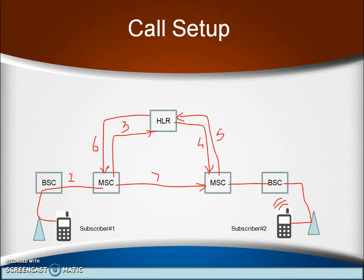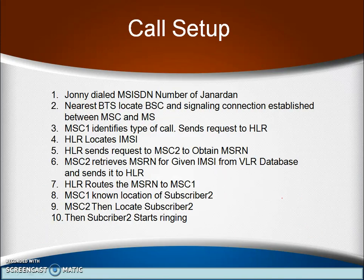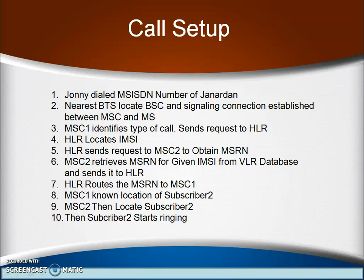This flow is summarized in steps: Step 1 — Johnny dials the MSISDN number of Janardhan. Step 2 — The nearest BTS locates the BSC and signaling connection is established between MSC and mobile station. Step 3 — MSC1 identifies the type of call and sends request to HLR. Step 4 — HLR locates the IMSI number. Step 5 — HLR sends a request to MSC2 to obtain the MSRN number. Step 6 — MSC2 retrieves the MSRN from its VLR database and sends it to HLR. Step 7 — HLR routes the MSRN number to MSC1. Step 8 — MSC1 notes the location of MSC2. Step 9 — MSC2 locates subscriber 2 and subscriber 2 starts ringing. This is how in the GSM network the call is established. Thank you very much.